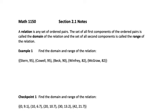The set of all first components of the ordered pairs is called the domain. Sometimes we call the first components the input values, and so the domain would be the set of all possible input values. The set of all second components is called the range, and sometimes we call the second components the output values.